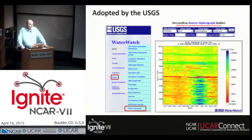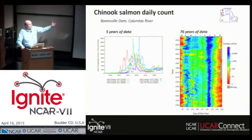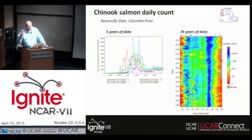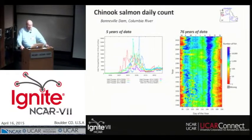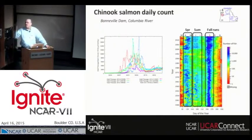But you don't have to look at water — you can look at fish. Here is salmon swimming up the Columbia past Bonneville Dam. You can look at five years of data with a spaghetti graph, or you can look at 76 years of daily data with a raster graph and see all these patterns. There are three different times the salmon go: the spring, the summer, and the fall runs — and you can see some changes on that very easily.